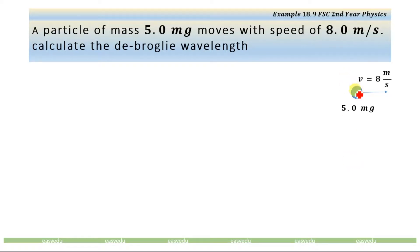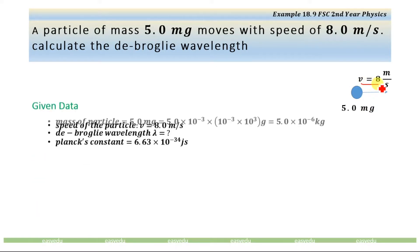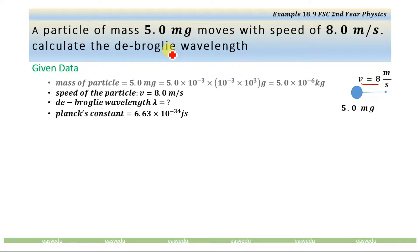Let's consider this as a particle. The mass of the particle is 5.0 mg and the velocity of the particle is 8 m per second. Now converting this 5.0 mg to standard SI unit, we will have 5.0 × 10⁻⁶ kg. This is in SI standard form.